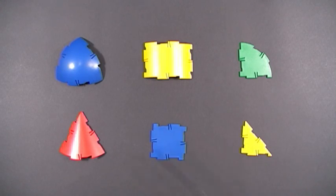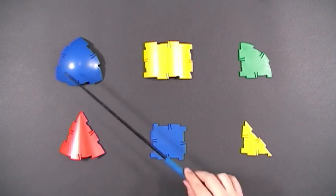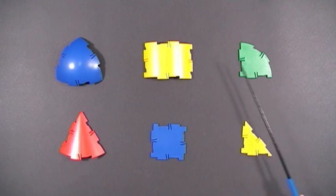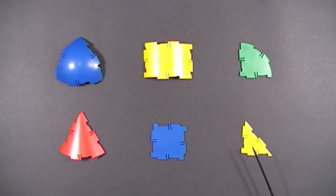These are the six types of pieces included with Polydron Sphere: sphere, cylinder, circle or quadrant, cone, square, and right triangle.